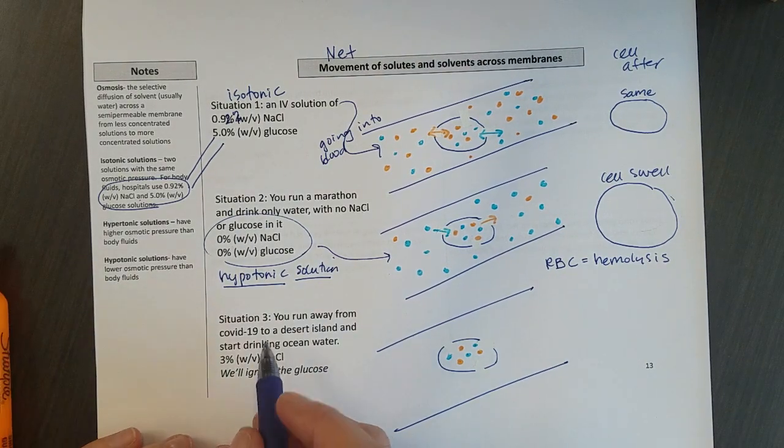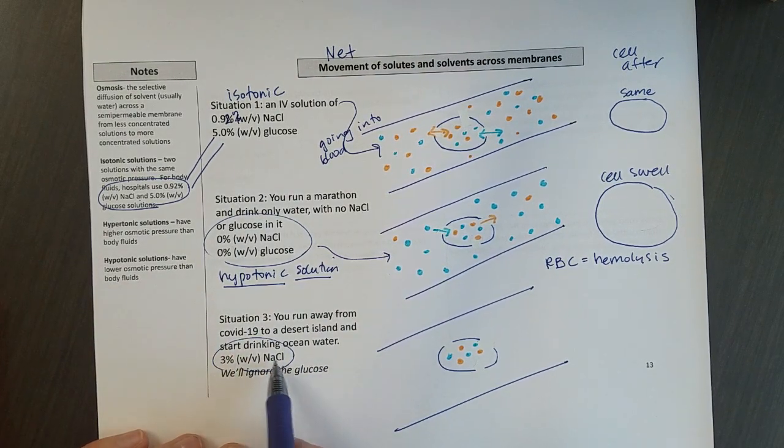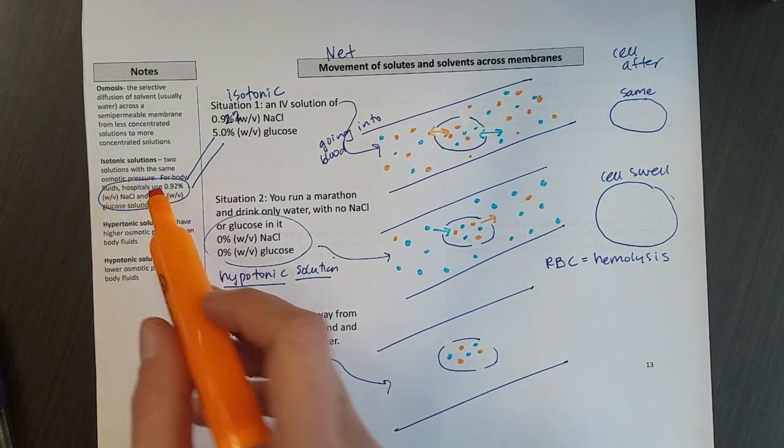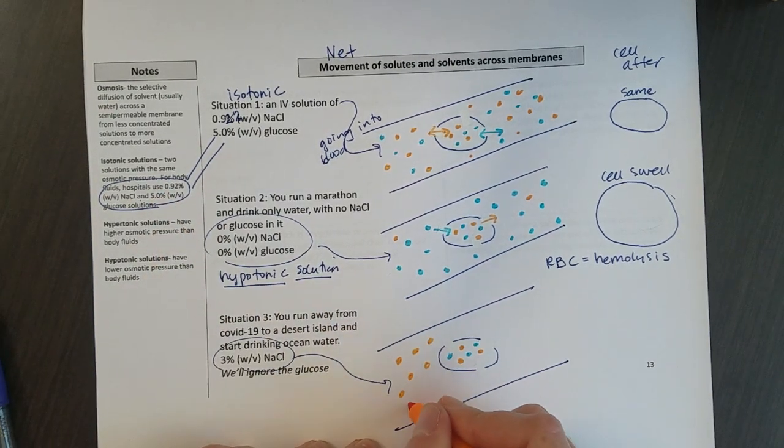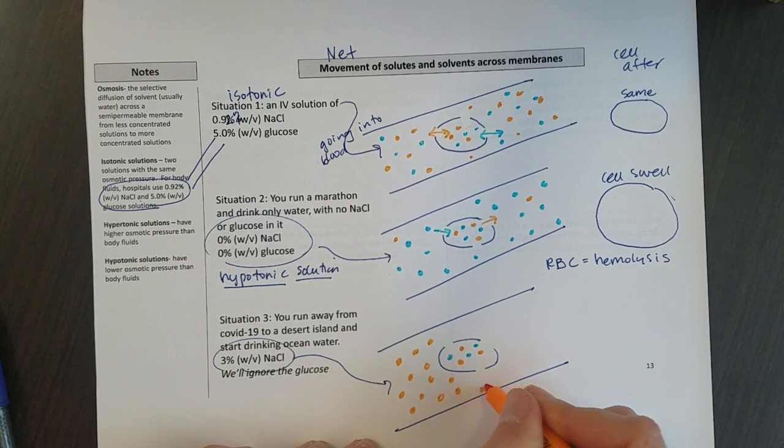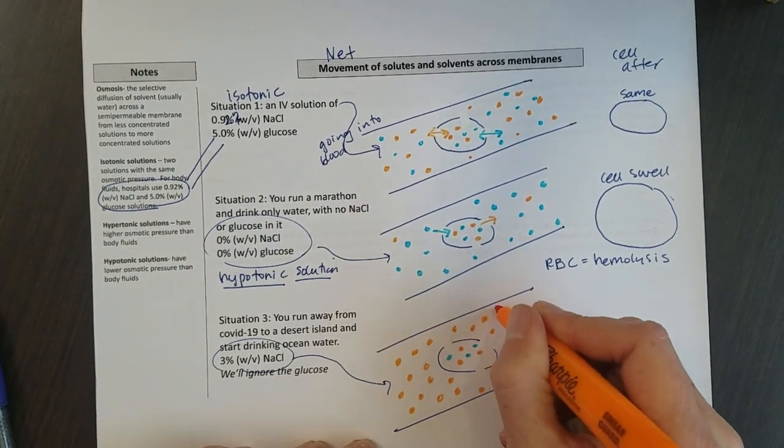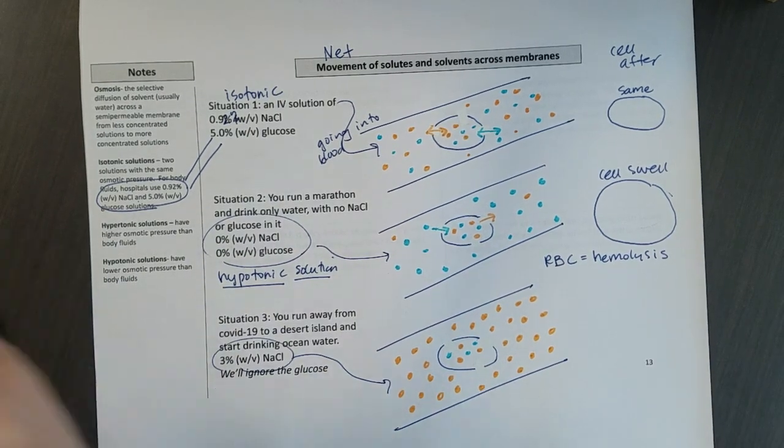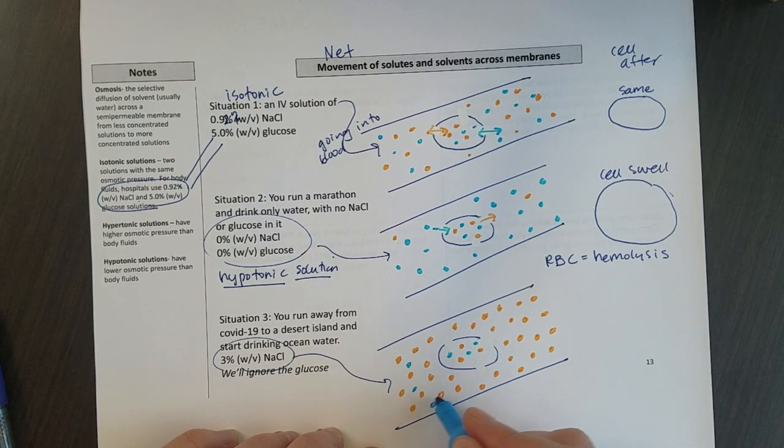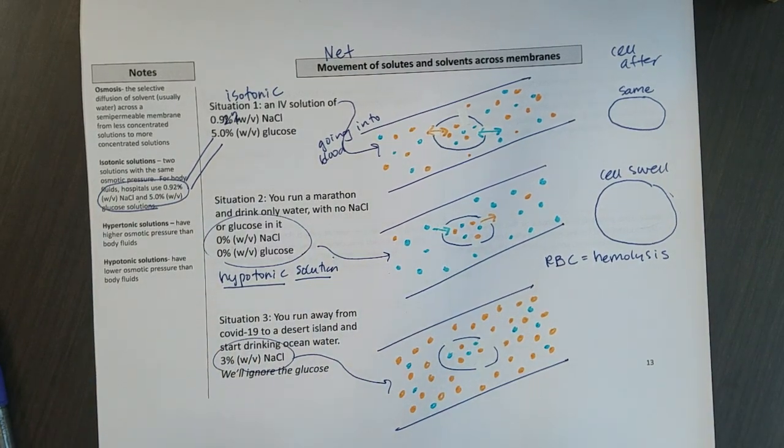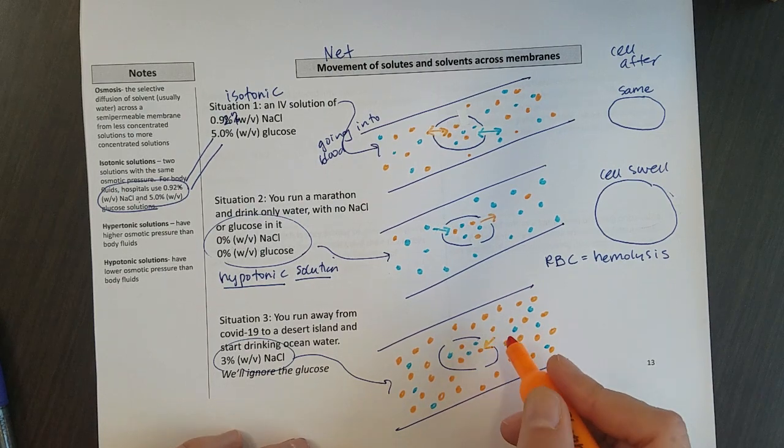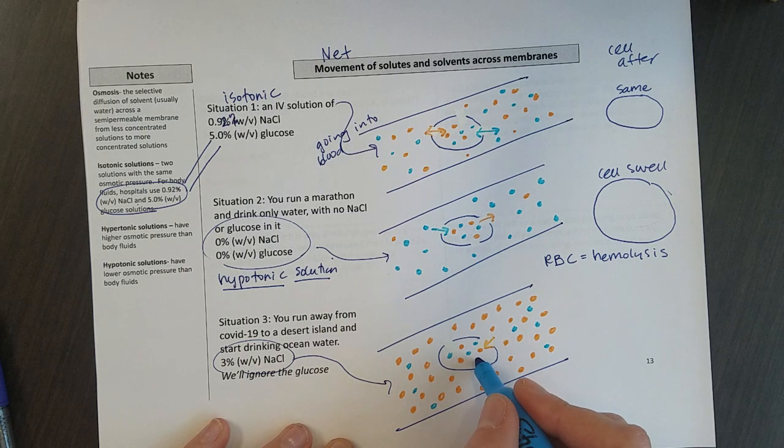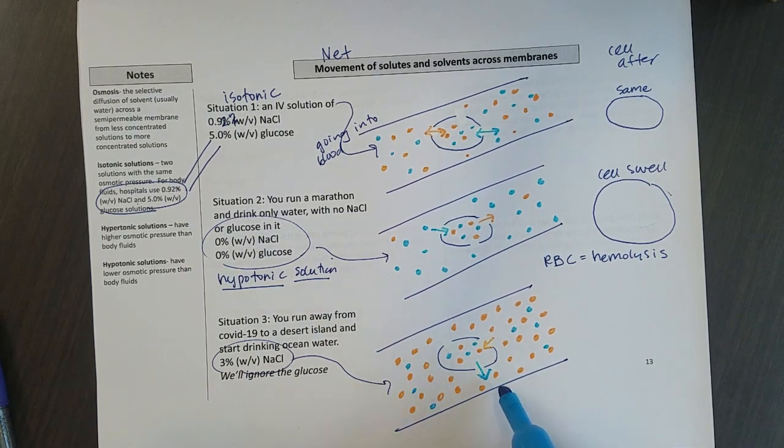And now we're going to ignore the glucose, but we start to drink that salt water, which is about 3% sodium chloride. So that's going into my blood. And that is much higher than the 0.92. So that means we end up with tons and tons of salt finding its way into our blood. So it's extremely salty. There's still some water, you're still drinking some water, but we have just way more salt than we normally would have. So a couple things happen. The salt is going to diffuse in.